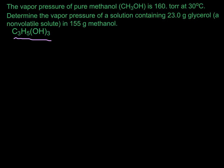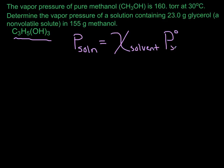The first thing we need to think about is Raoult's Law. We're going to use Raoult's Law to determine this new vapor pressure for the solution after we've added this non-volatile solute. The vapor pressure of the solution is equal to the mole fraction of the solvent multiplied by the vapor pressure of the pure solvent. Our strategy is to find the mole fraction first, identify the vapor pressure for the pure solvent, and then calculate the vapor pressure of the solution.